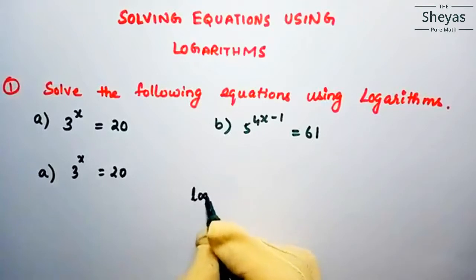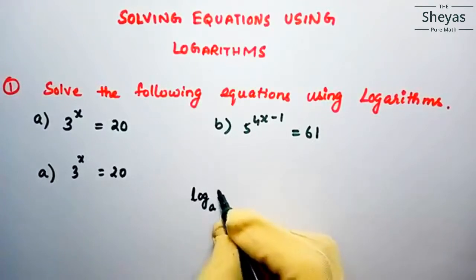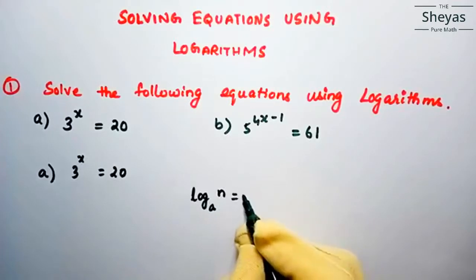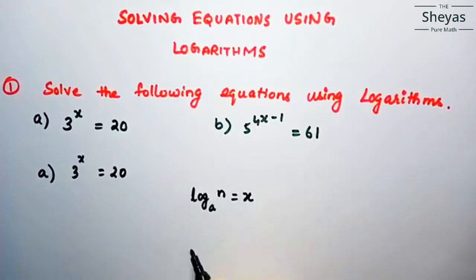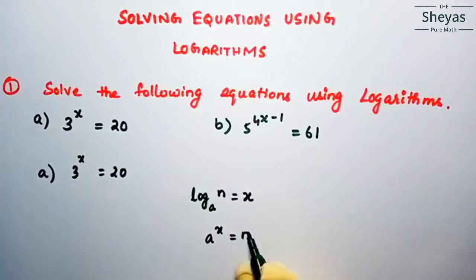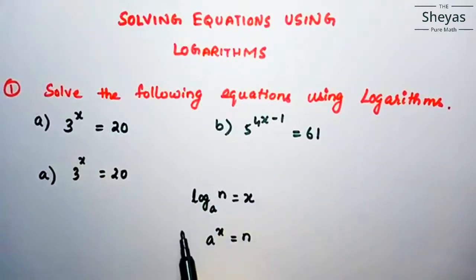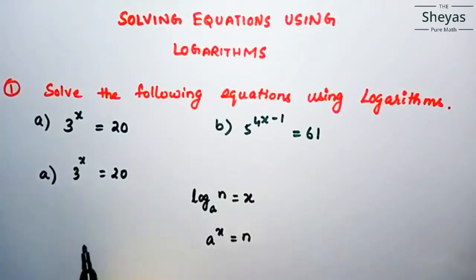So log to the base a of n is equal to x — this is the logarithmic form. In exponential form, a power x is equal to n. Now the question is in exponential form, and we are going to convert it to logarithmic form, because we are going to solve using logarithms. So this exponential form we are going to convert to logarithmic form.